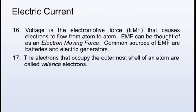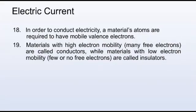Voltage is the electromotive force, or EMF, that causes electrons to flow from atom to atom. EMF can be thought of as an electron-moving force. Common sources of EMF are batteries and electric generators. The electrons that occupy the outermost shell of an atom are called valence electrons. In order to conduct electricity, a material's atoms are required to have mobile valence electrons.